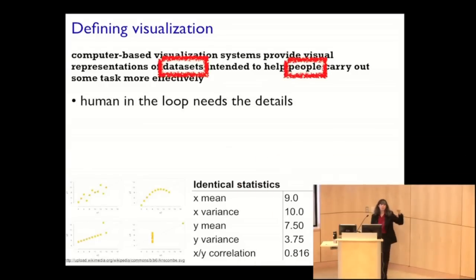Well, one is there's data and there's people and there is some connection between them. So there is some human in the loop who needs the details about a dataset.